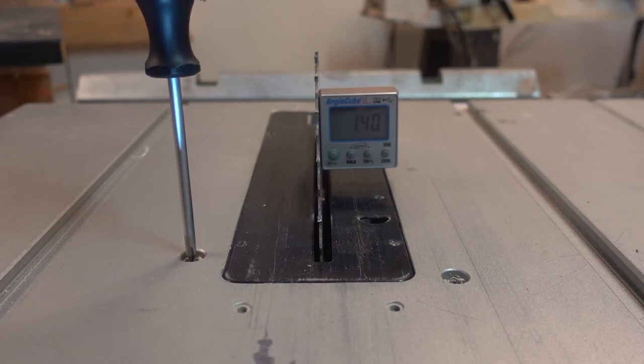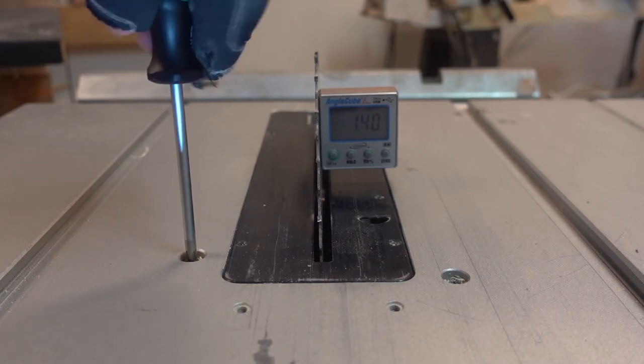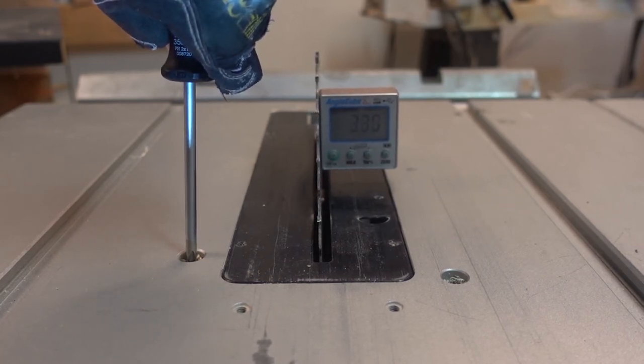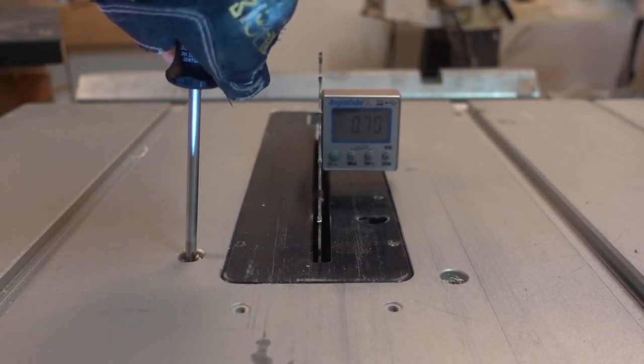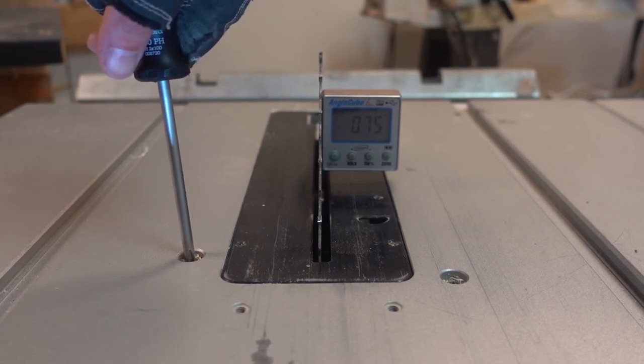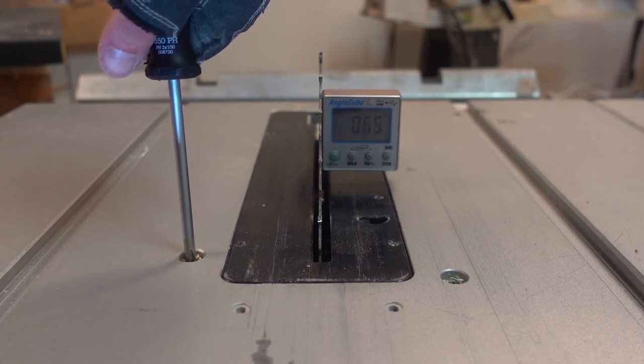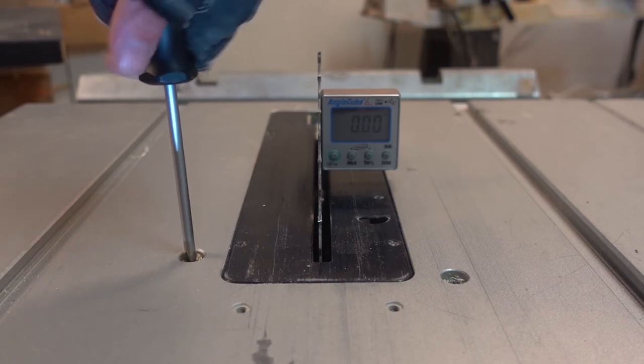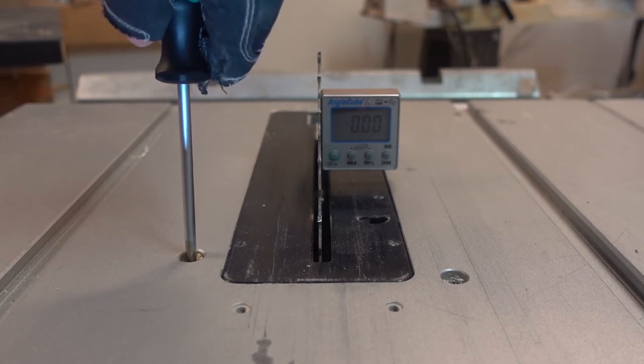To adjust the saw blade I loosen the lever that holds the blade fixed. I then adjust the set screw with a screwdriver and push the wheel adjusting the blade back to the 0 degrees stop. After some fine adjusting and tuning I get it to stop at 0 degrees.